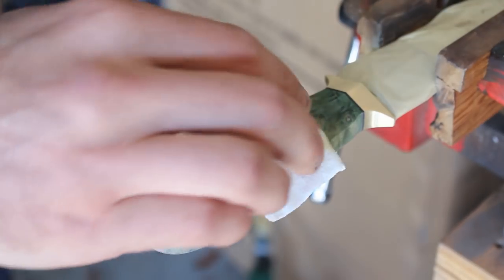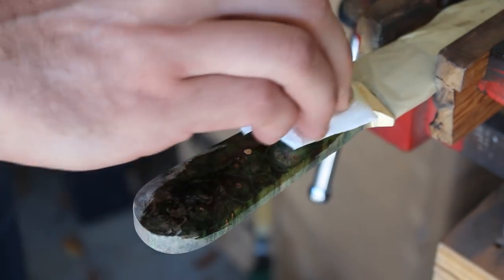For the finish I'll apply some boiled linseed oil and then once that dries I will buff the handle out.